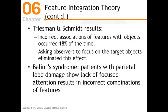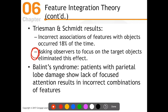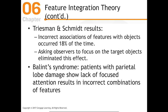With Balint's syndrome — a parietal lobe damage condition — we see a lack of focused attention. These patients make incorrect combinations of features very often, which provides evidence for feature integration theory. It tells us they're able to do the pre-attentive stage, but they're not able to do the next step — the actual focused attention — and so they can't integrate those features correctly.